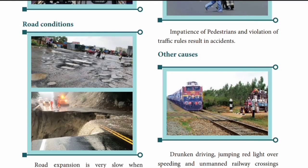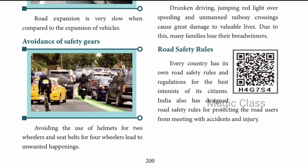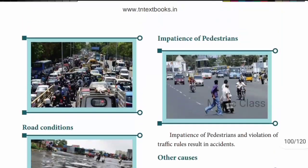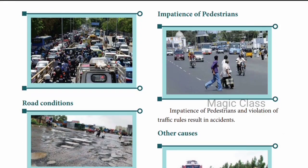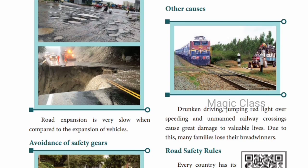Next is road condition. Look at the pathetic condition of the road - potholes everywhere, making it difficult and very slow to go. Roads are narrow, so road expansion is needed. Avoidance of safety gears is another cause - two-wheeler riders must wear a helmet, car passengers must wear a seatbelt. Next is impatience of pedestrians - pedestrians must wait for the signal, raise their hand, and then cross. Traffic signals must be obeyed. Only when the particular light allows should you cross. Other causes include unmanned railway crossings.